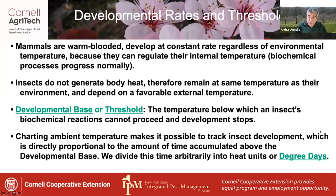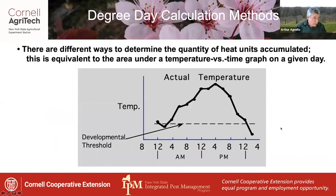As biologists, we divide this time arbitrarily into heat units or degree days. There are different ways to determine the amount of heat units accumulated, which is equivalent to the area under a temperature versus time graph for a given day. Here you see the temperature plot in a 24-hour cycle starting off low in the middle of the night and peaking towards late afternoon, with a developmental threshold denoted near the bottom.